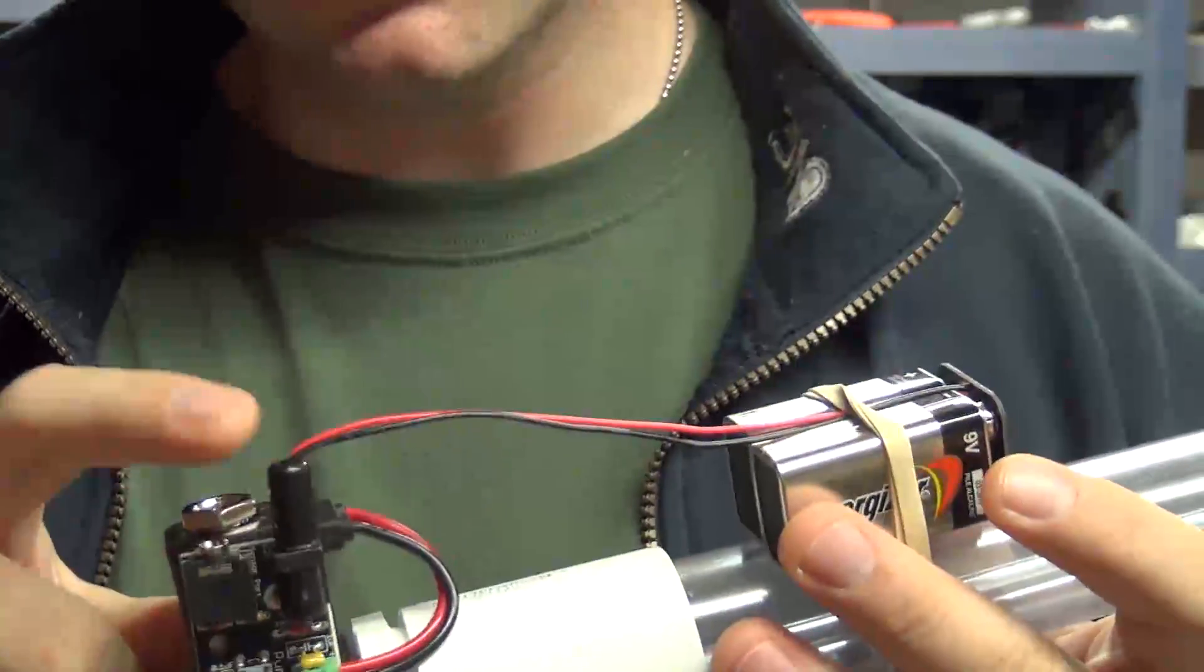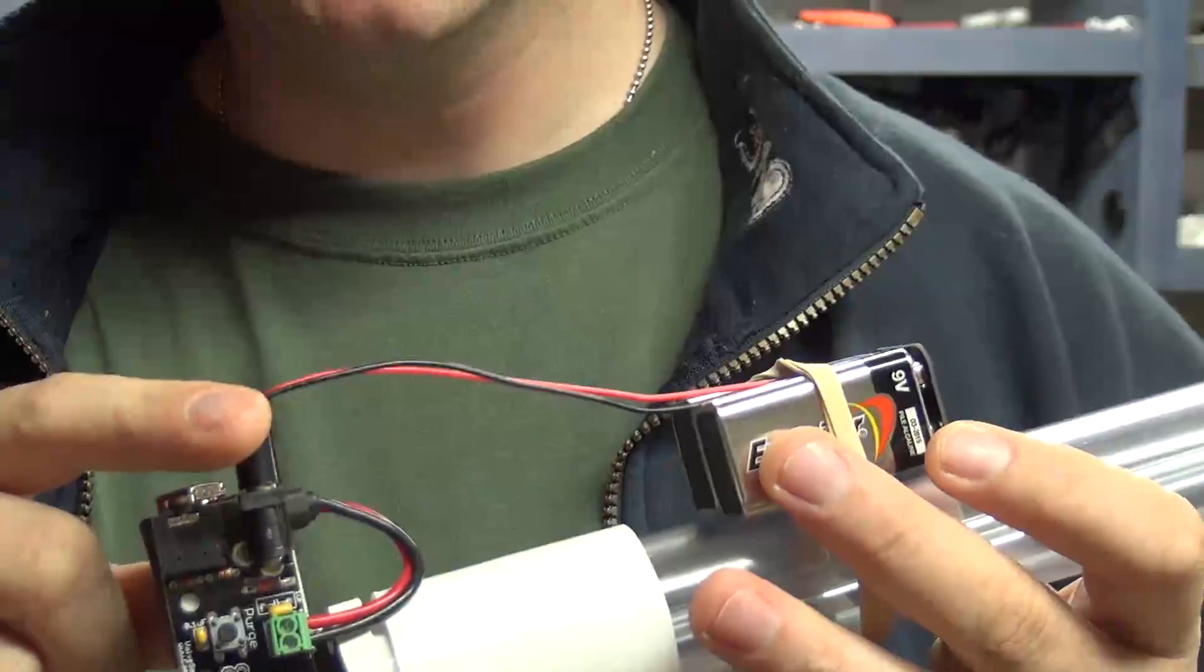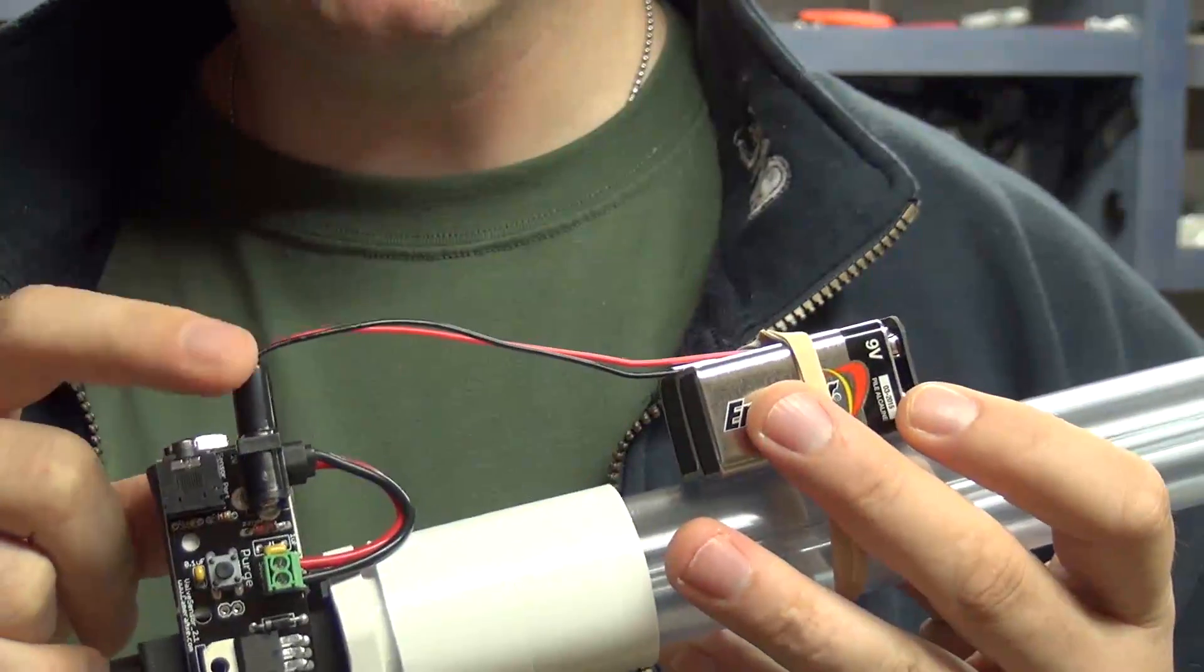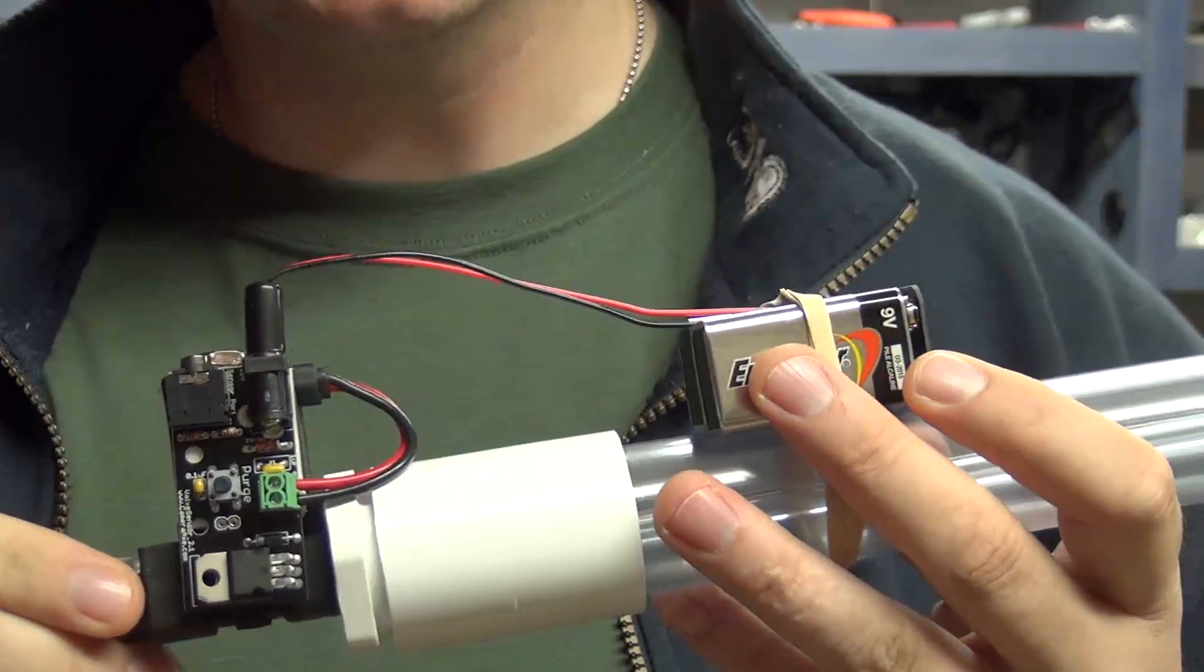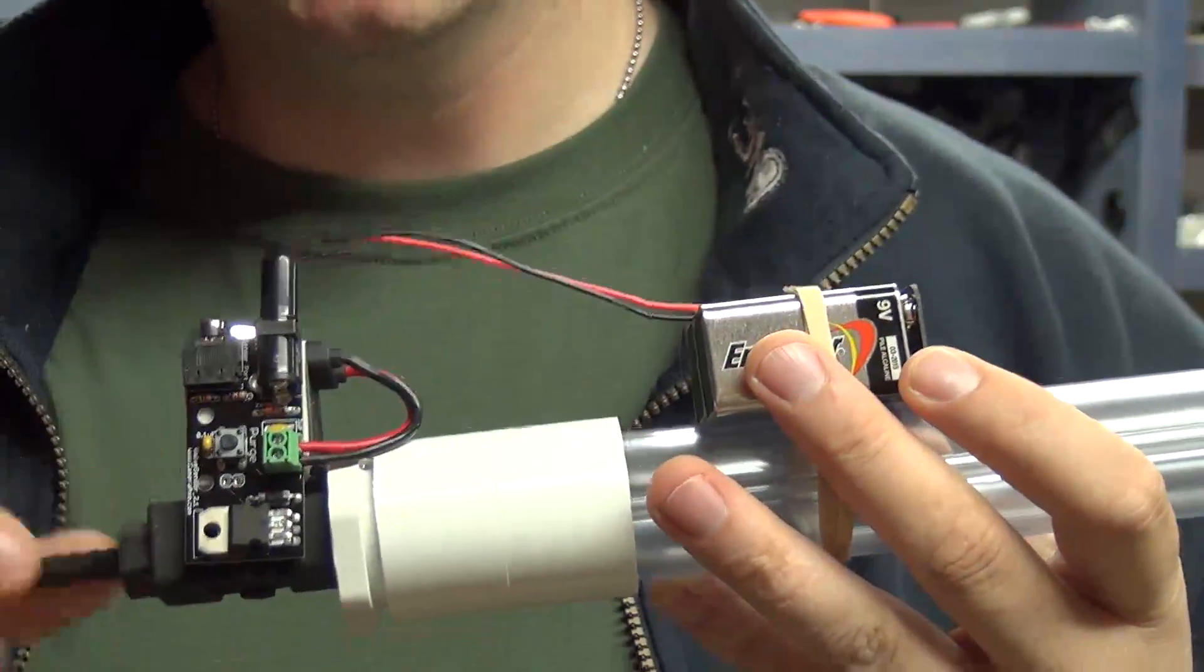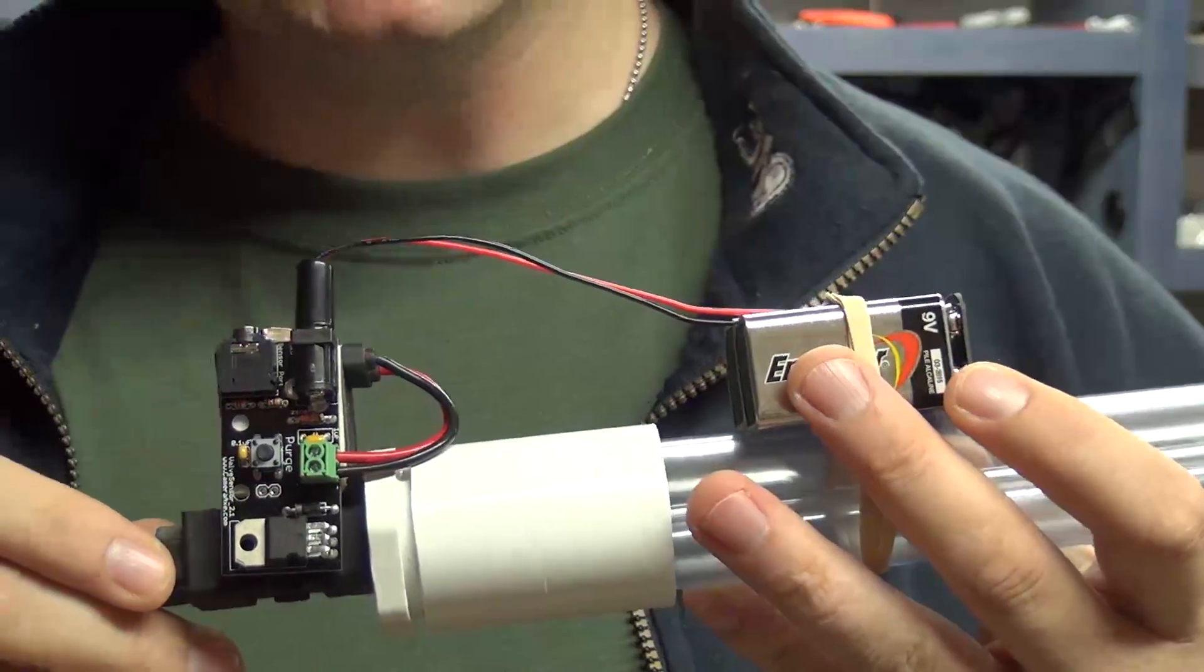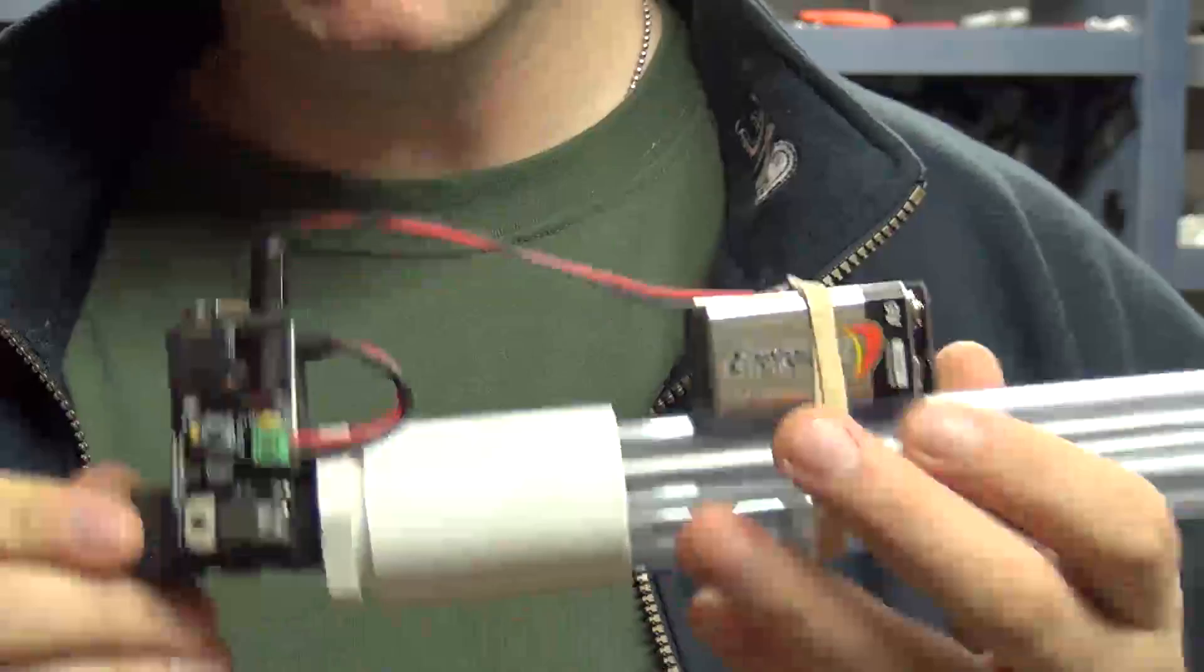You can also use an external power supply if you want to plug it into the wall. Again, it's just a 2.1 millimeter jack so there's lots of power jacks you can buy on eBay and things that will power this. You just want to look for something in the 12 to 18 volt range that has an amp or more of current and you should be good.